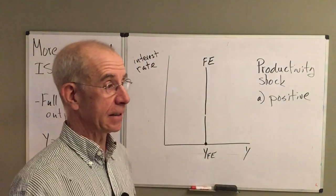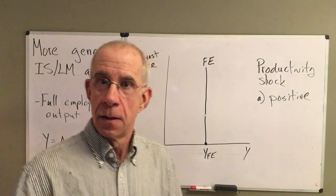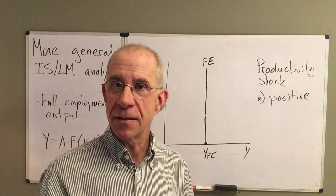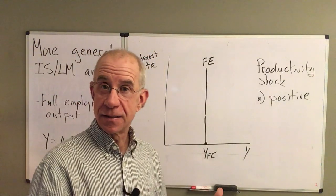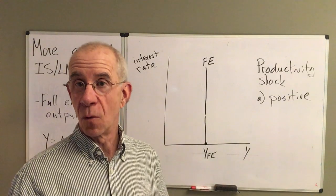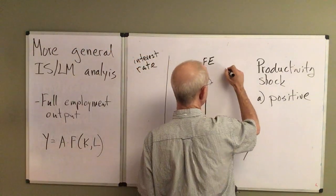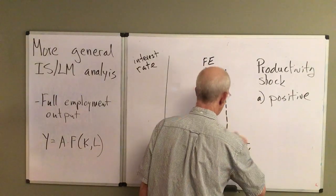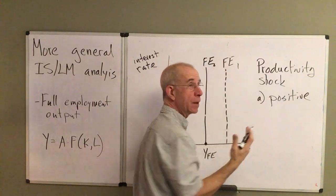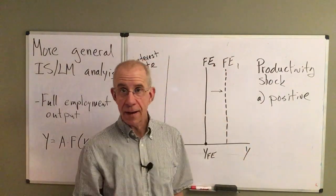Now, an example of that would be, say, the internet revolution. It's a new way of doing business which makes the existing capital stock and labor stock more efficient. That, in essence, could shift the full employment level of output to the right.